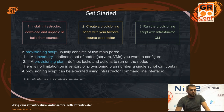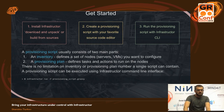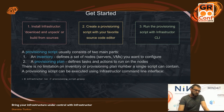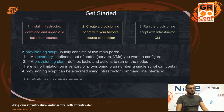You need to create a provisioning script using your favorite source code editor — it doesn't matter which one. Then you can run the provisioning script with the Infrastructure command line interface. A provisioning script usually consists of two main parts: first is the inventory, which defines a set of nodes — bare metal servers or virtual machines you want to configure. The second part is the provisioning plan, which defines tasks and actions to run on those nodes. You can define as many inventories and provisioning plans in the same file.